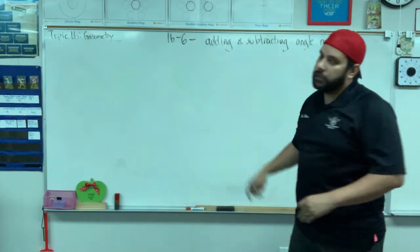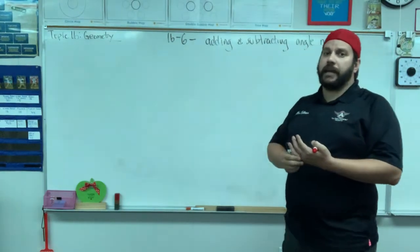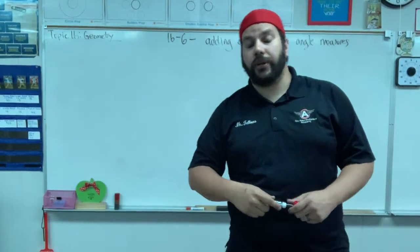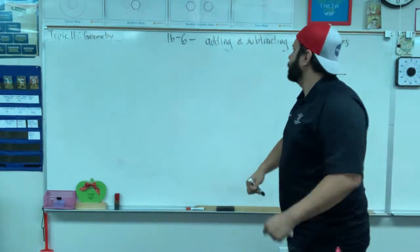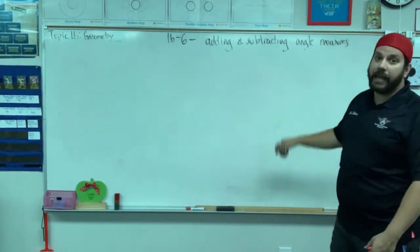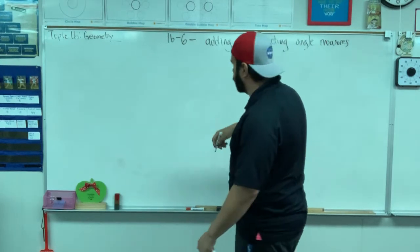Alright, now we've looked at how to measure angles. We know that a complete circle is 360 degrees. Now we're going to work on adding and subtracting angle measures. This is very important stuff.